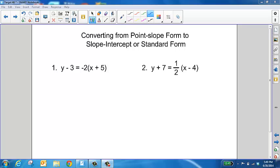When you are starting with an equation in point-slope form and you want to write an equivalent equation in either slope-intercept or standard form, you're going to follow the same procedure regardless of which form you're trying to get to. Because in order to get to standard form, you have to go through slope-intercept.